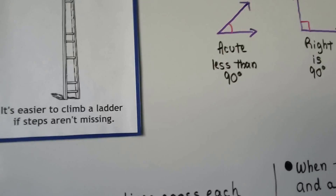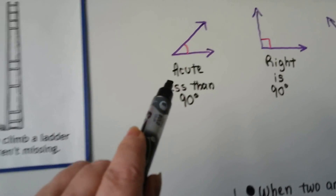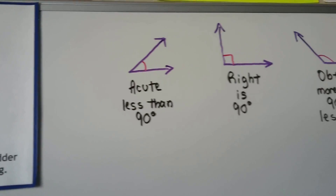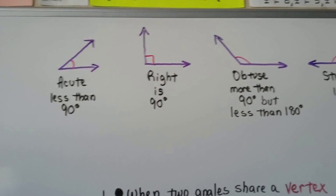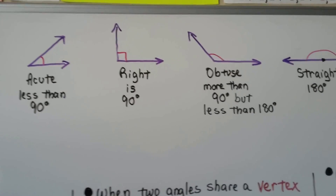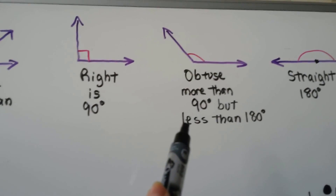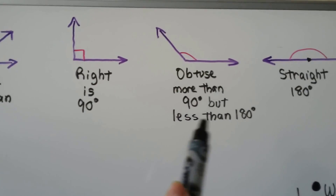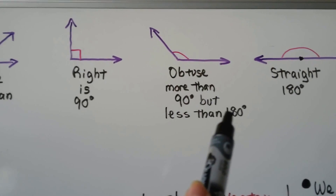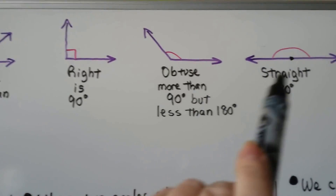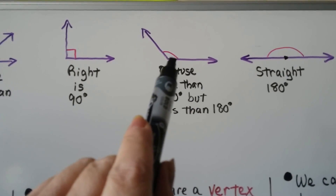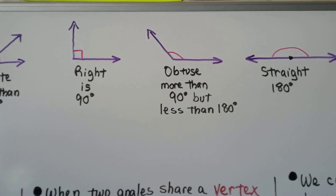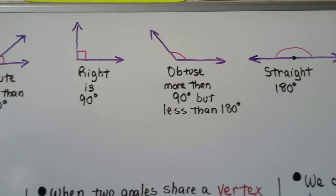Quick review: when an angle is less than 90 degrees, it's acute. When it's 90 degrees — we'll see that little box — it's a right angle. When it's more than 90 degrees but less than 180, which would be the straight line, it's obtuse.